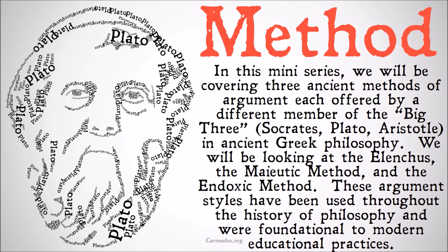In this mini-series, we're going to be covering three ancient methods of argument offered by a different member of each of the big three: Socrates, Plato, and Aristotle, and ancient Greek philosophy. Note, this is methods of argument — we're not actually going to be covering the arguments offered by these philosophers, but rather the way in which they argued. We're going to be looking at the elenchus, the maiotic method, and the endoxic method. These argument styles have been used throughout the history of philosophy and in different ways were foundational to modern educational practice.